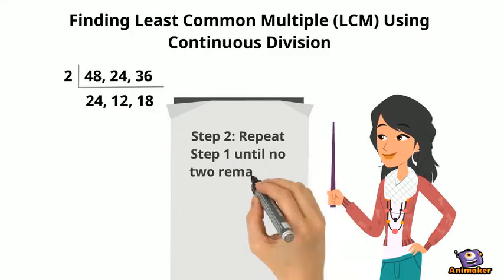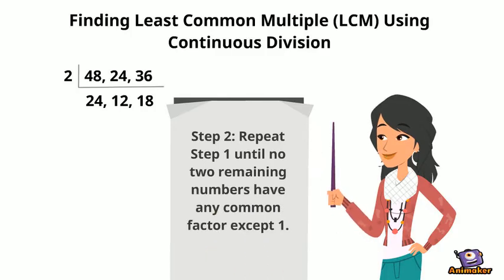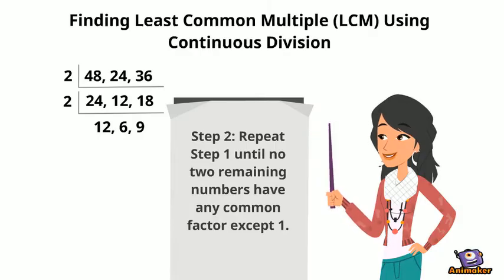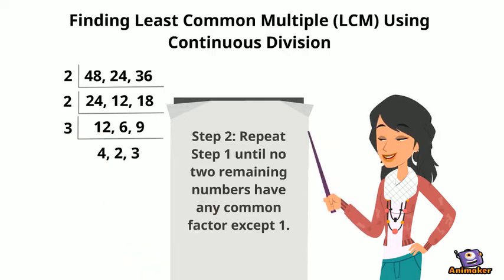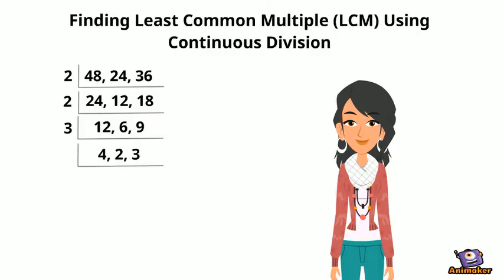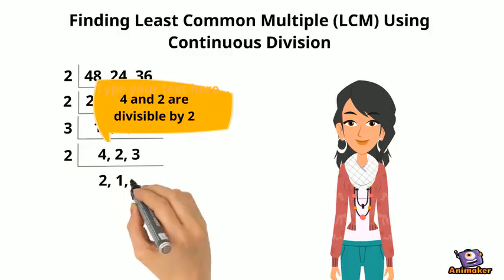Step 2: Repeat step 1 until no two remaining numbers have any common factor except one. Continue using two as their common divisor if all the quotients are divisible by two. If the quotients are not divisible by two, check if they are all divisible by three, five, seven, or eleven, and use it as their common divisor. Divide the numbers by prime numbers. If a number cannot be divided, it is copied down to the next step of division.